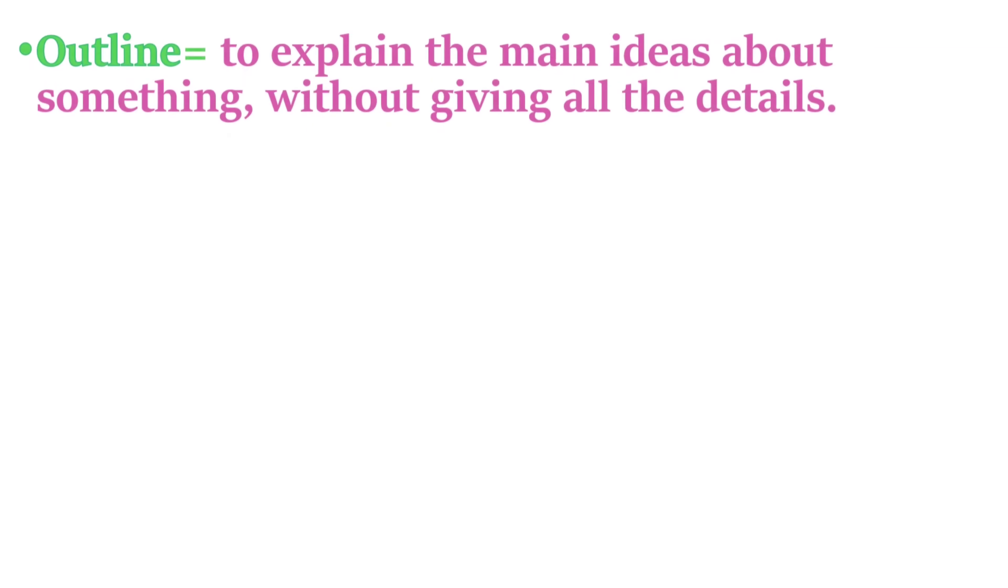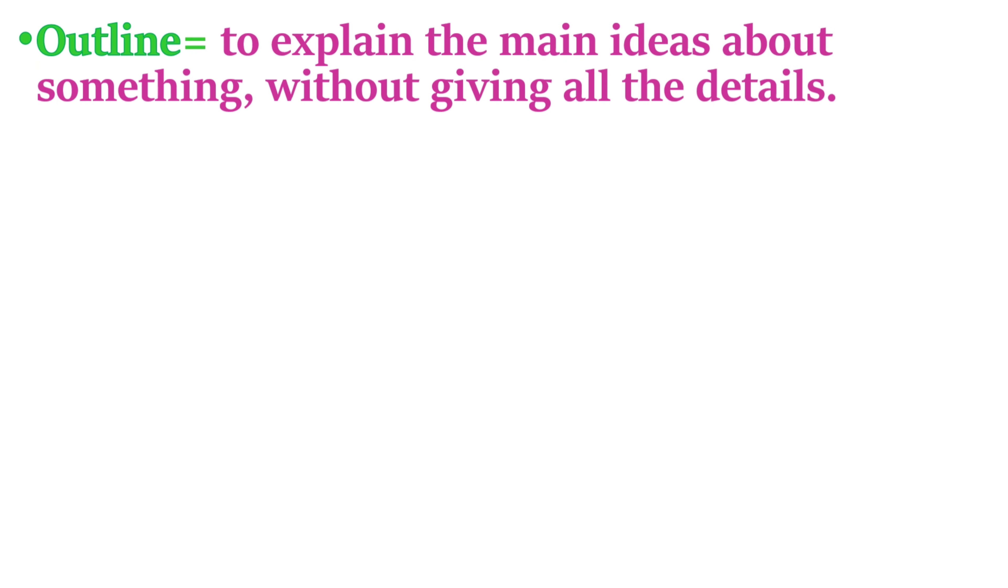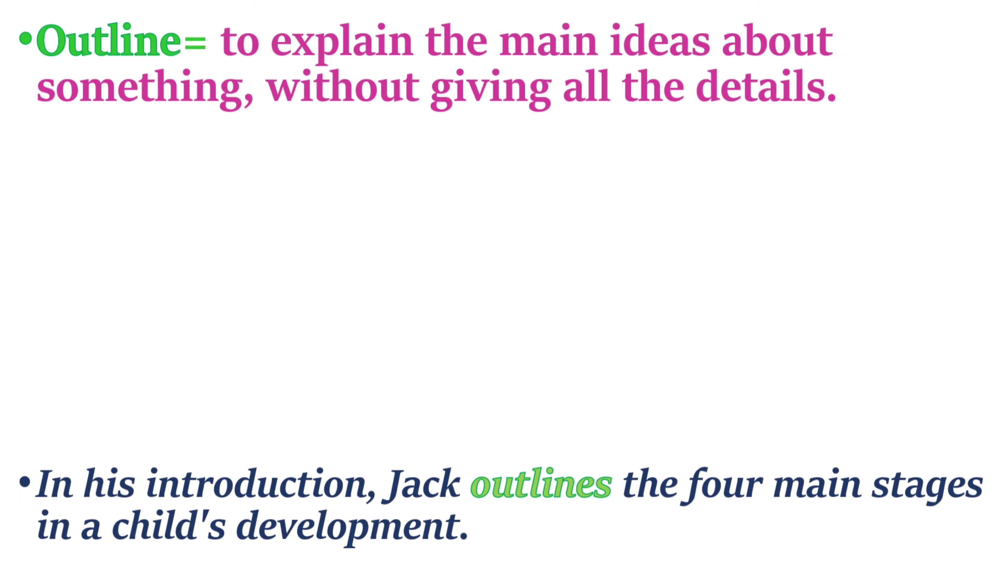'Outline' means to explain the main ideas about something, without giving all the details. Example: In his introduction, Jack outlines the four main stages in a child's development.